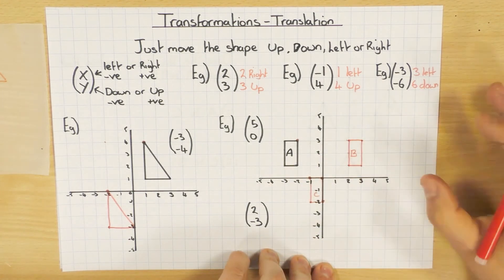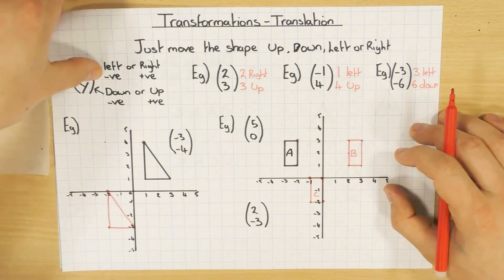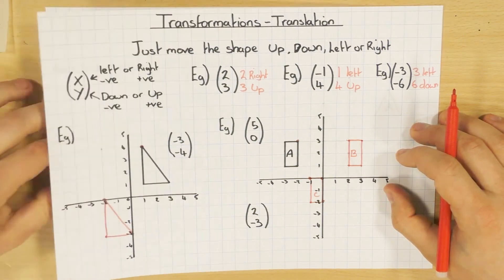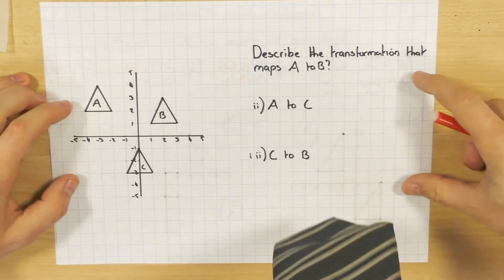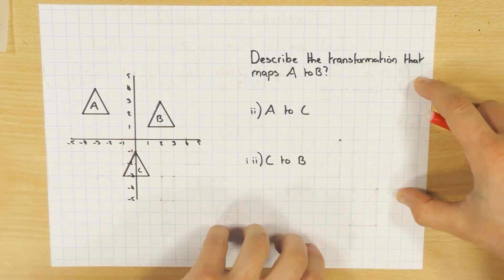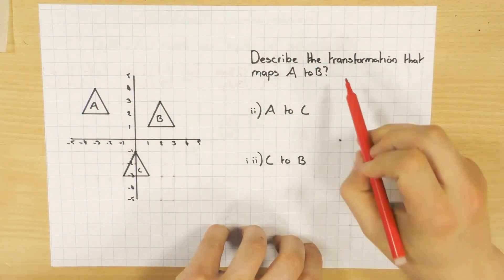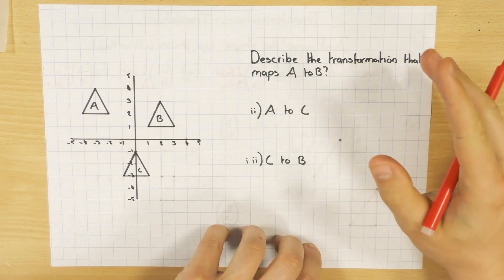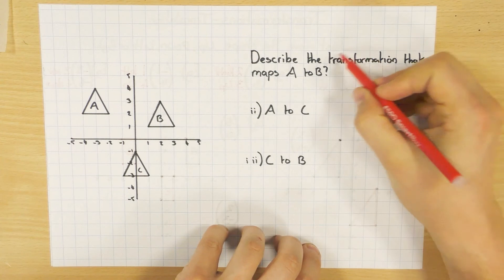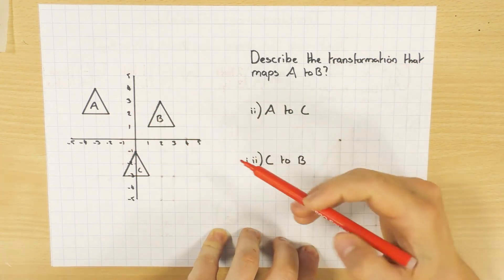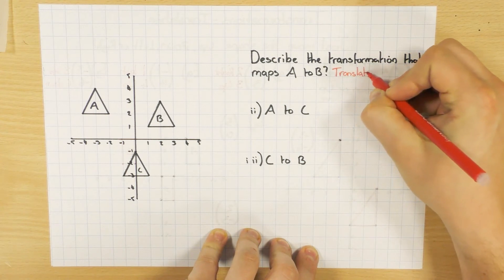You can use tracing paper at any point to check these — in the exam you're entitled to have tracing paper, so make sure you ask for it. Now, you might also be asked to describe a translation. The question says: describe the transformation that maps shape A to shape B. Because it says transformation, it could be any of the four types. For the first mark, you need to say which transformation it is — it's easy to spot it's a translation because it's just moved. So one mark: say it's a translation.